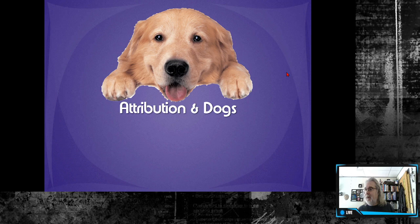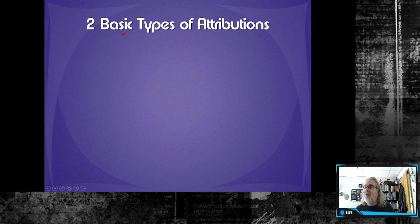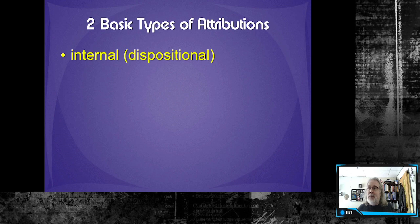So we're ascribing human behavior to dogs or it's just human reasoning to the behavior of dogs. If we look at the next, there's two basic types of attributions. The first type is internal. You'll sometimes see it's called a dispositional attribution. They mean the same thing.